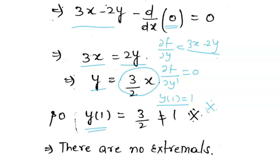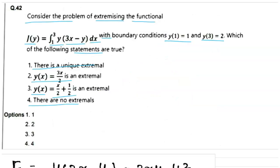So there are no extremals. For this question, we found there are no extremals. So if we talk about the options, since the question is from Part C, option 4 will be correct: there are no extremals. The other three options are incorrect.